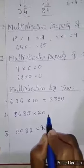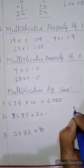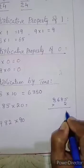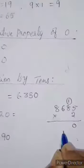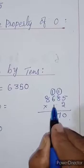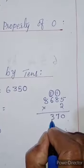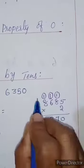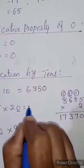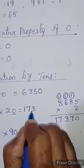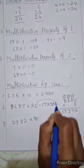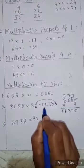Next example: 8685 multiplied by 20. You will multiply 8685 by 2. 5 into 2 is 10, carry 1 above the 8. 2 into 8 is 16 plus 1 is 17, carry 1 above the 6. 2 into 6 is 12 plus 1 is 13, carry 1 above the 8. 2 into 8 is 16 plus 1 is 17. Then add a 0 at the right side of this number. So your answer is 1,73,700.